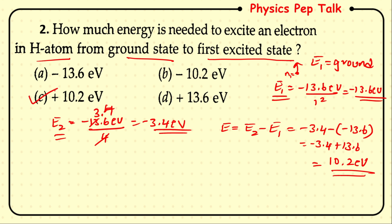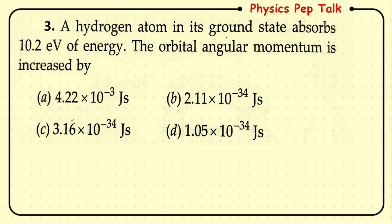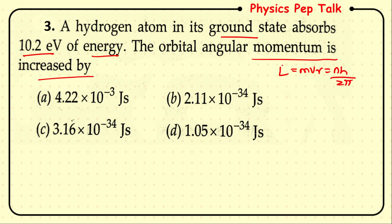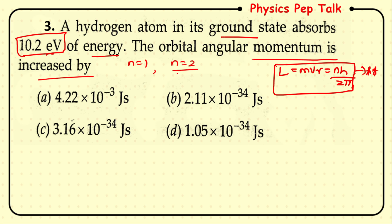Next problem: a hydrogen atom in its ground state absorbs 10.2 eV of energy. The orbital angular momentum is increased by how much? Orbital angular momentum L = mvr = nh/2π. Since the atom absorbs 10.2 eV, it transitions from the ground state n = 1 to the first excited state n = 2.